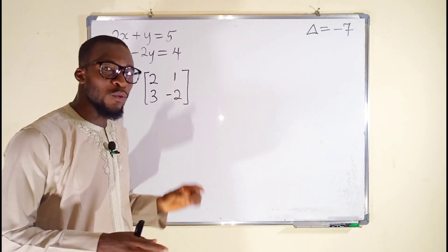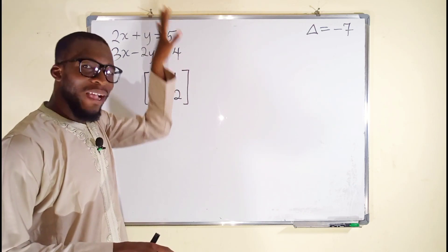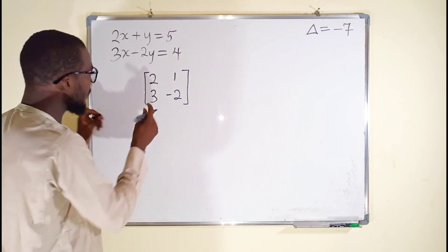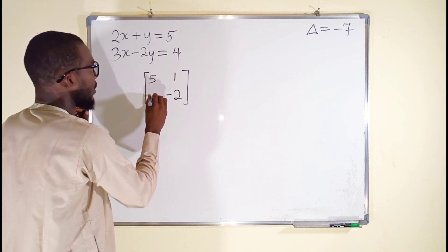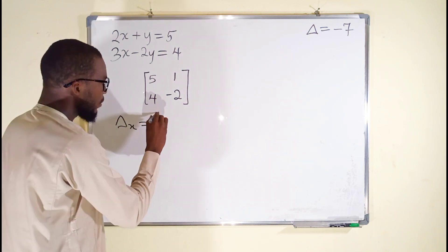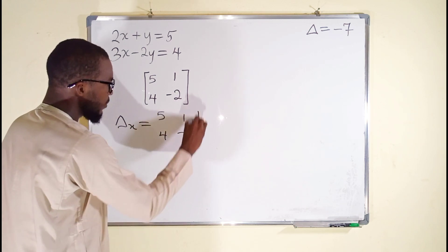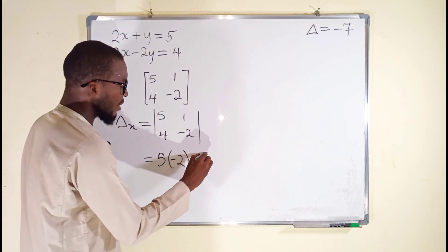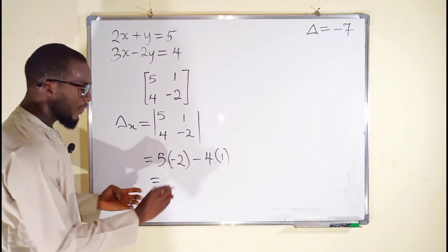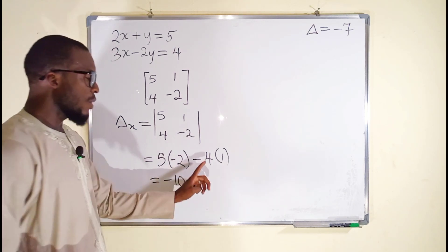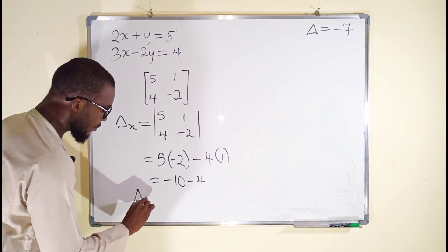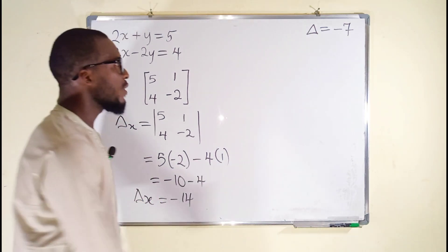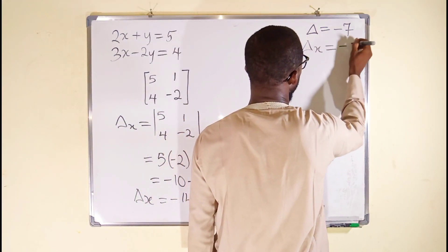Next, we are going to find the determinant with respect to x. To do that, we replace the x column with the constant terms, which are 5 and 4. So the determinant with respect to x will be: 5, 4, 1, negative 2. Finding the determinant: 5 times negative 2, minus 4 multiplied by 1. Simplifying: 5 times negative 2 is negative 10, minus 4 times 1 is 4. The determinant with respect to x is equal to negative 14.